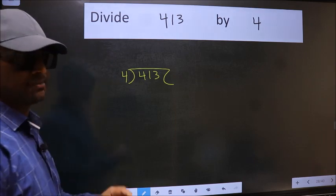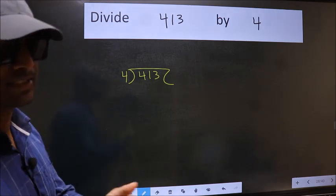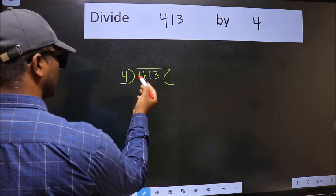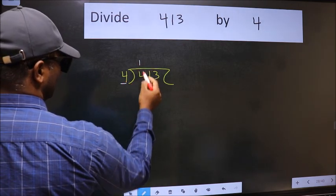This is your step 1. Next, here we have 4, here also 4. When do we get 4 in 4 table? 4 1's 4.